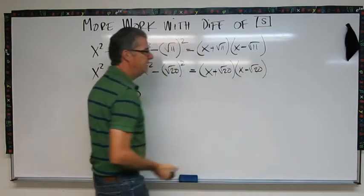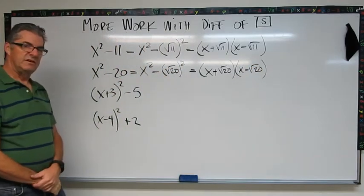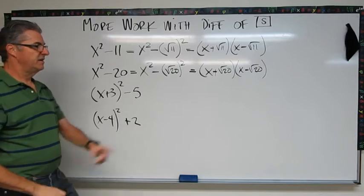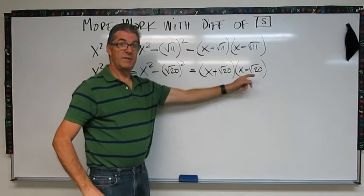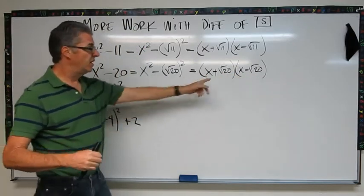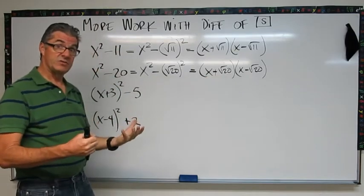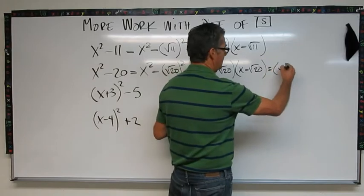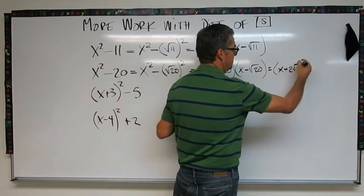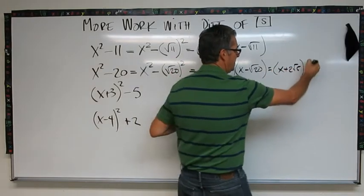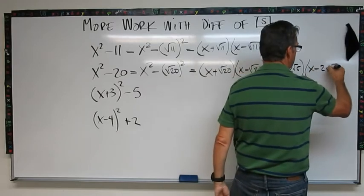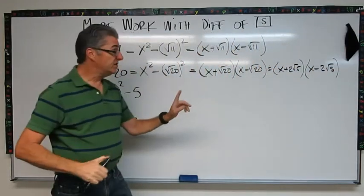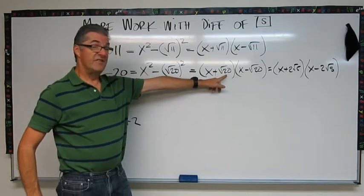Now are we finished? If you said no, you're correct. Root 20 can be simplified. Remember that's 4 times 5 under the root. The 4 is a perfect square, comes out as a 2. So this becomes x plus 2 root 5 times x minus 2 root 5.